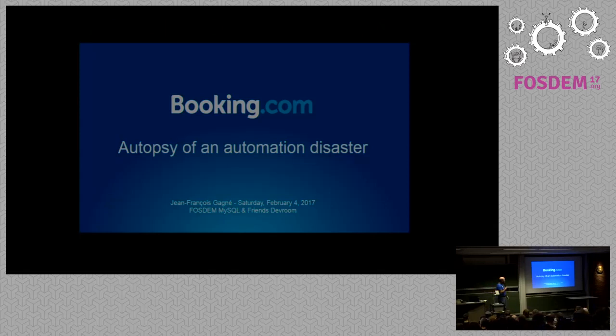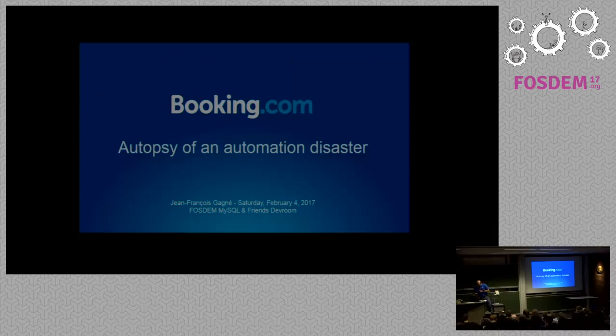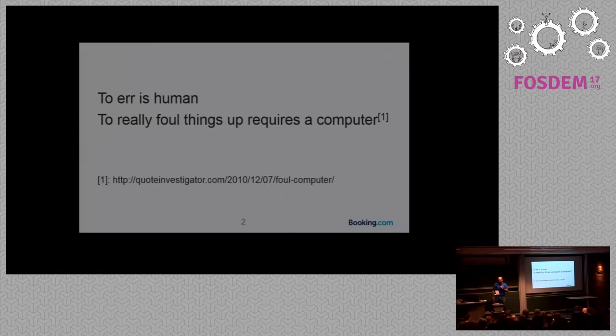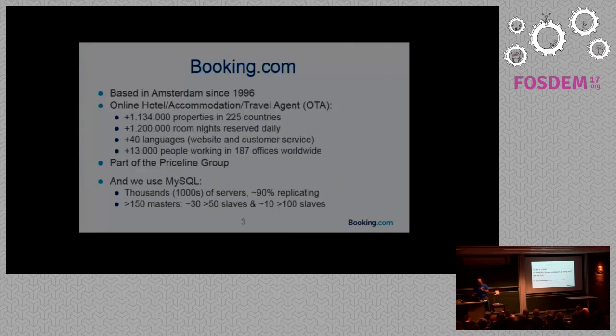One thing is that something happened at Booking, and it was caused by automation. Automation is supposed to give us less work, not to break things and need humans to fix stuff. So I think there's a few interesting things there. We all know that saying: humans make errors, but to really mess things up, you need a computer. Or, in our case, a script, an automation script.